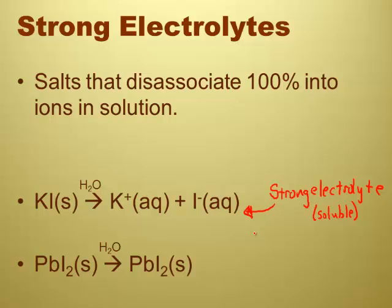Within reason, of course — everything can be oversaturated. According to solubility rules, potassium iodide is soluble. Potassium is a group 1A element, so it is definitely soluble. So if it's a soluble salt, it's going to be a strong electrolyte. And if it's a strong electrolyte, it's a soluble salt.